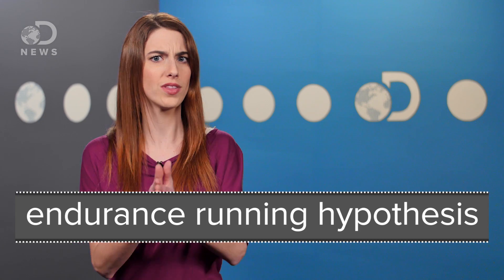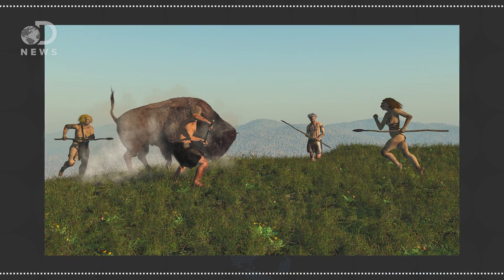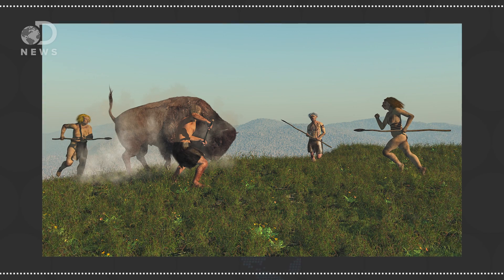This supports what's called the endurance running hypothesis, or the idea that our ancestors were really good at running long distances in order to chase down and wear out prey. In this kind of hunting style, those with long toes are evolutionarily selected against, because it takes them more work to run down the same prey.